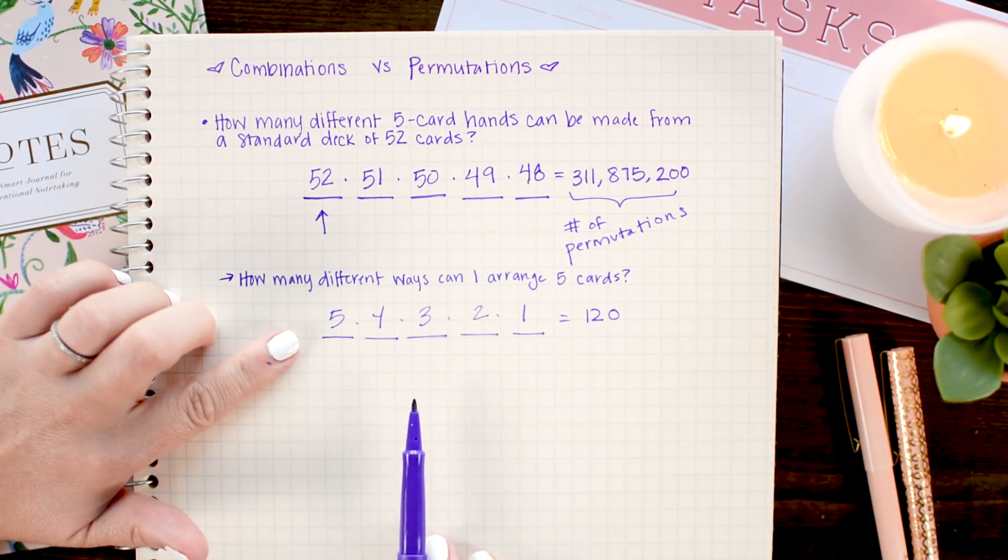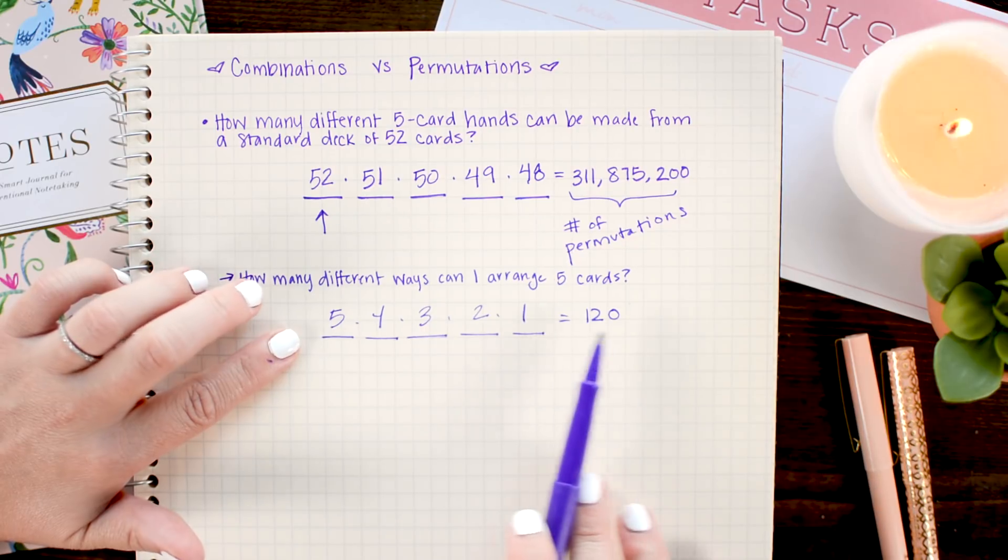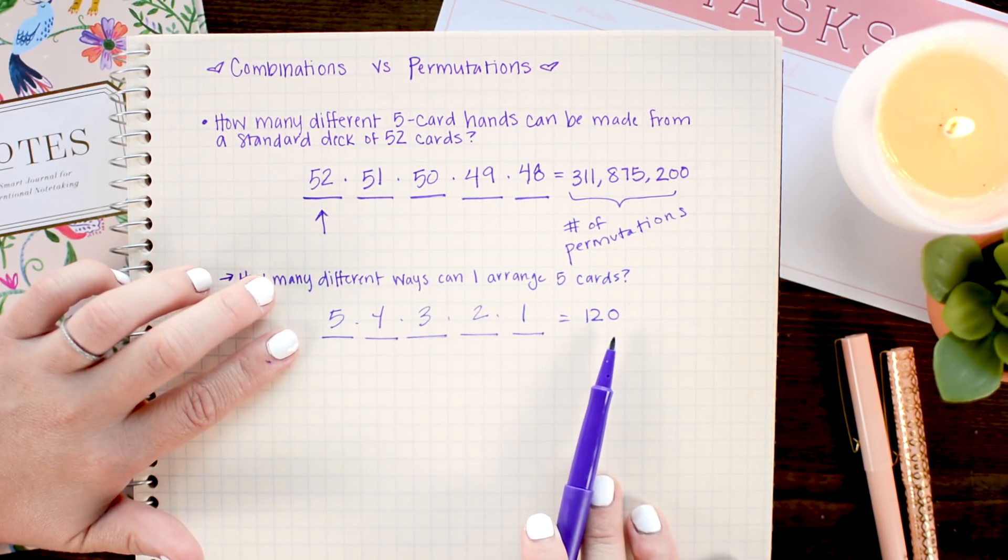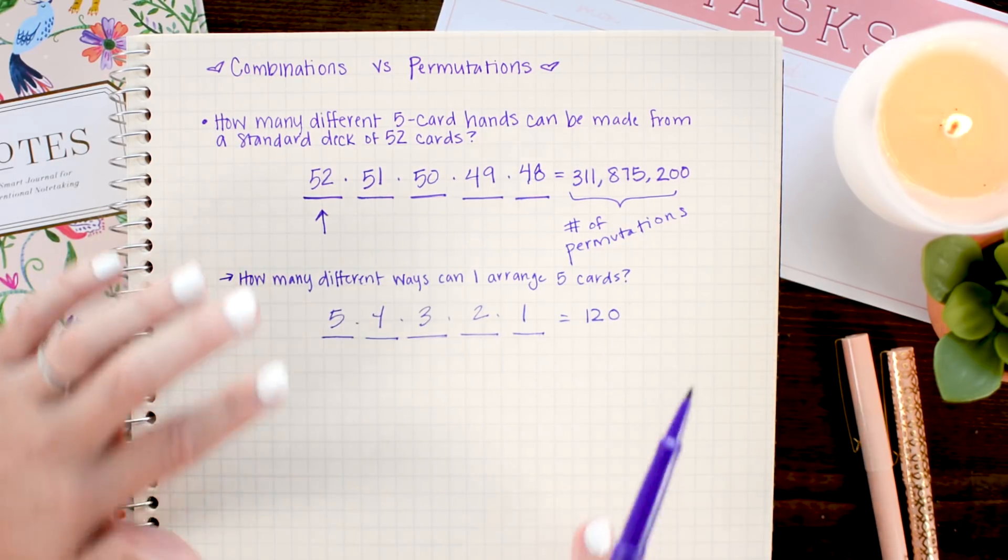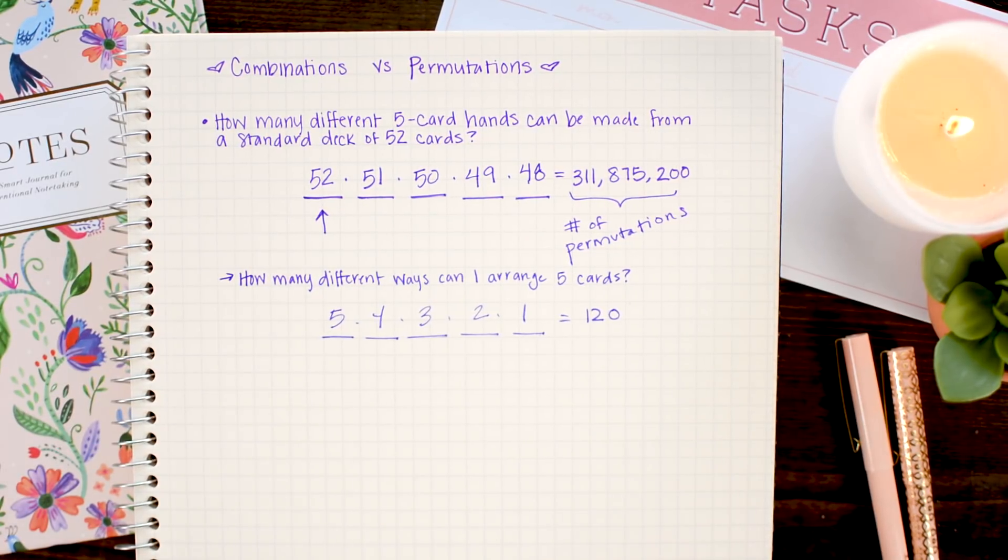This means that any one hand of cards can be arranged 120 ways. Think about that for a second. That means when you're sitting there with your cards in your hand and you're trying to organize them, there are 120 different ways you could organize those cards.